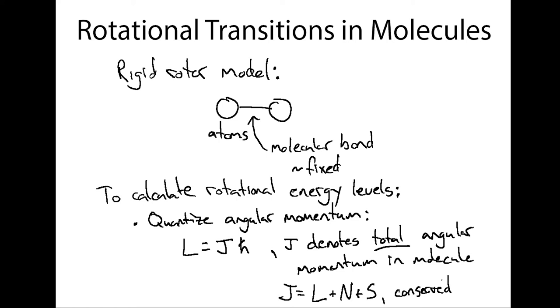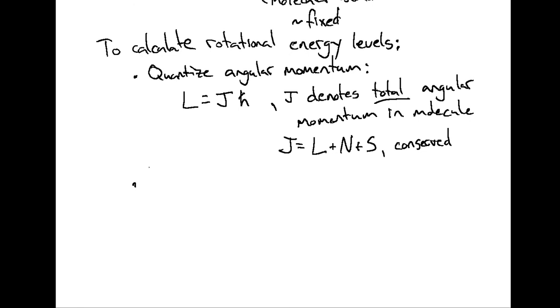Which is why we use j to characterize it, even though the types of transitions we're talking about — these rotational transitions — are focusing on the component of angular momentum that arises from the atoms spinning around each other.